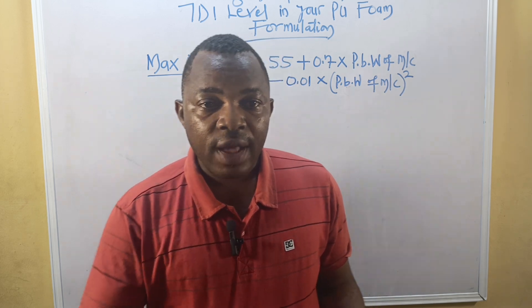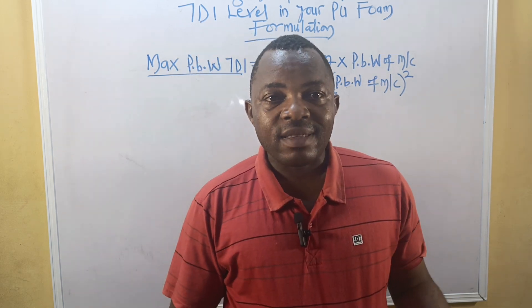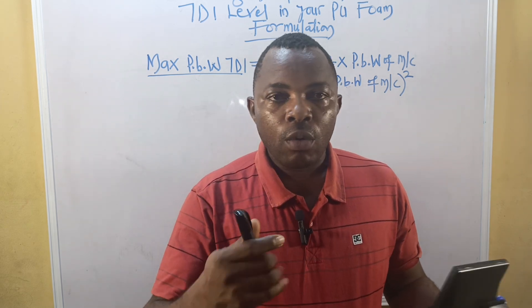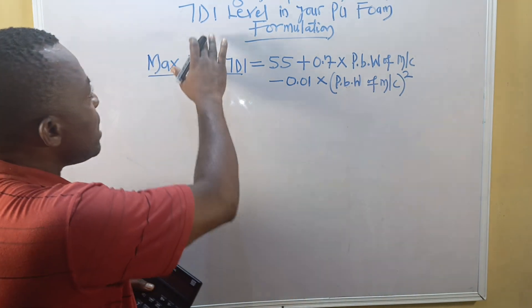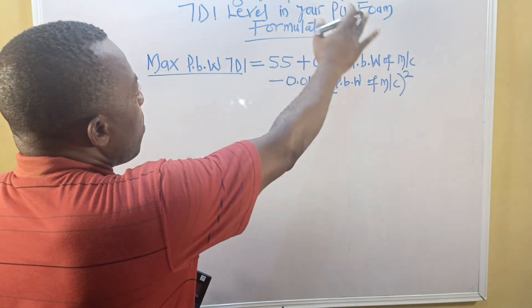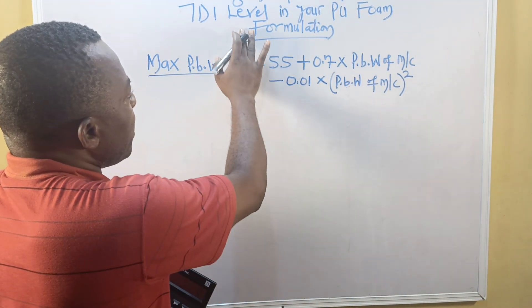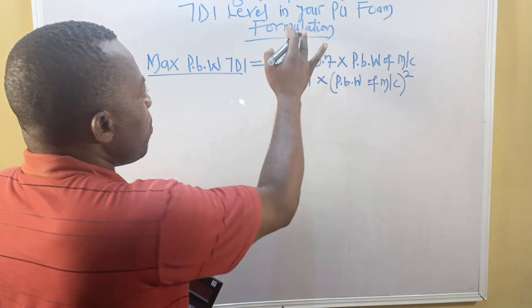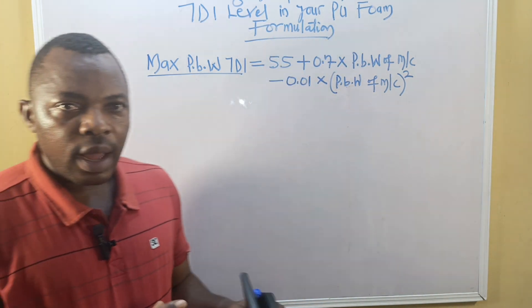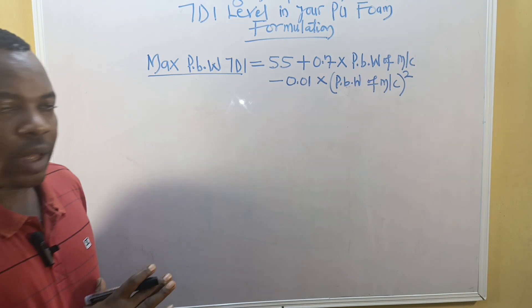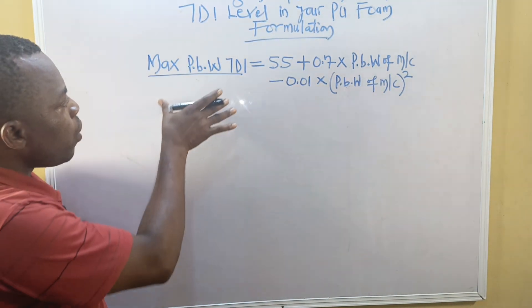So far we are on Lesson 27, and this lesson will be all about checking your maximum TDI level in your PU foam formulation. That is what we are going to consider today.